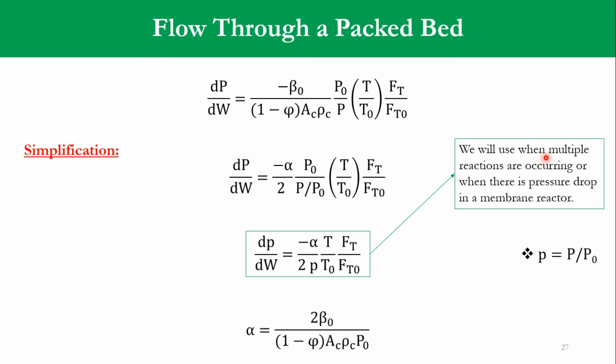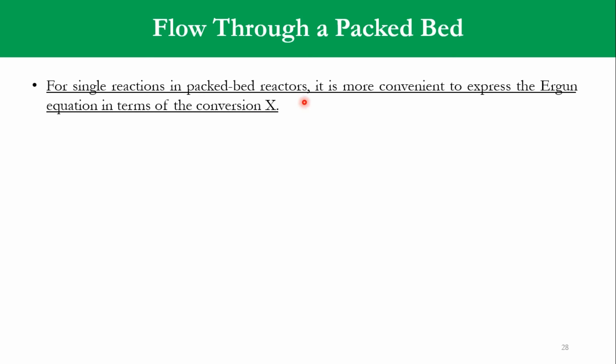We will use this equation when multiple reactions are occurring or when there is a pressure drop in a membrane. That is the applicability of that equation. The unit of α is per kg or per pound mass. Now, for single reaction in a packed bed reactor, it is more convenient to express the Ergun equation in terms of the conversion. So, we know that FT over FT0 is equal to 1 plus εx. We know ε is equal to yA0 times δ, and that yA0 is FA0 over FT0.